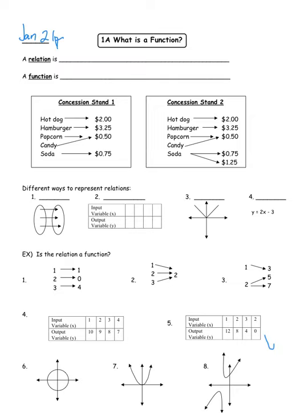As we begin: what is a function? We start with a definition for a relation. A relation is a rule which ties two sets together, and that rule can be displayed in several different ways. Different ways to represent relations: the first is called a mapping, where we display how they're connected with arrows. The second is a table, where we display connections by position. We can also look at a graph and an equation — all of those represent relations or functions.